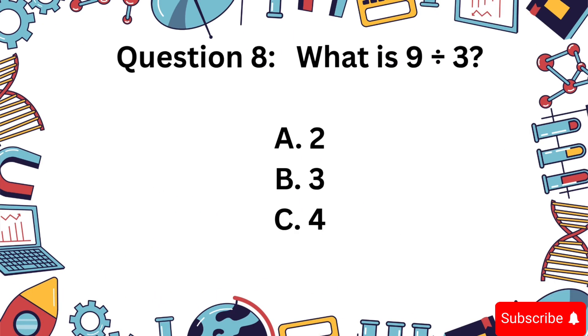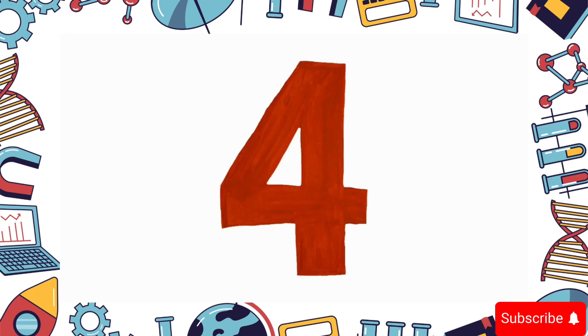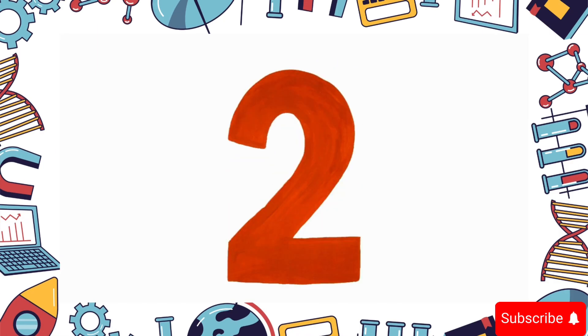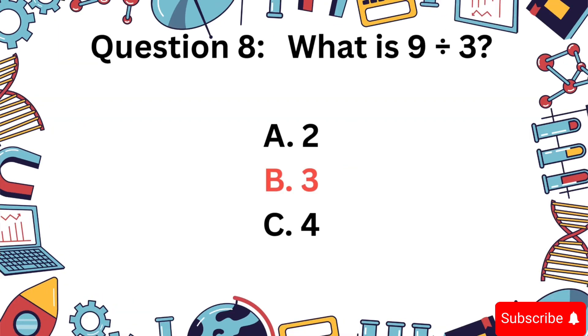9 divided by 3. Is it A, 2, B, 3, or C, 4? Correct: B, 3.